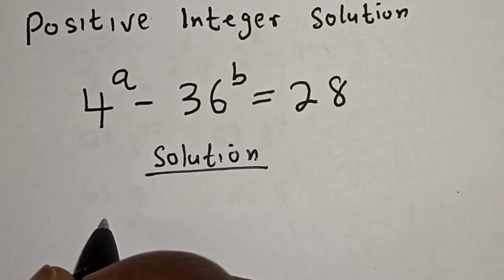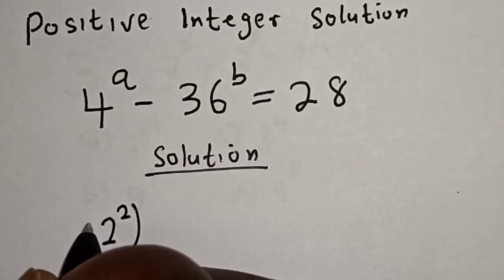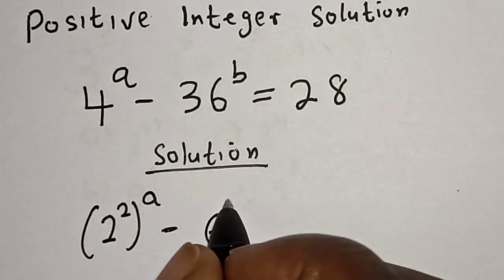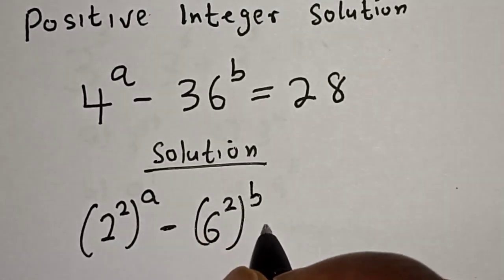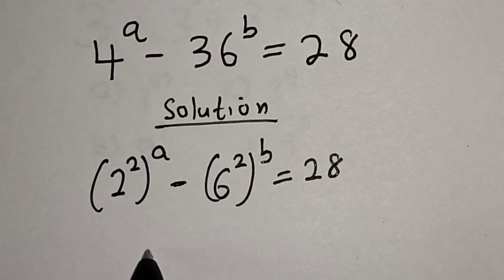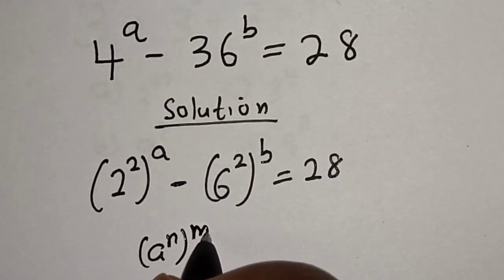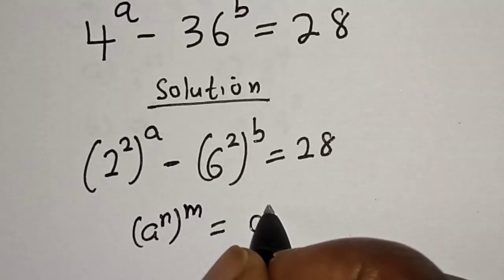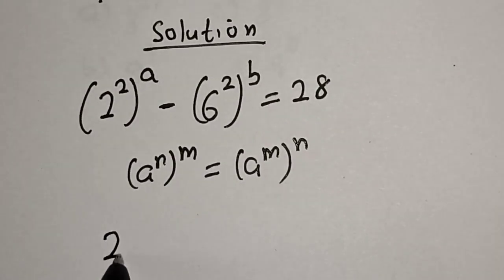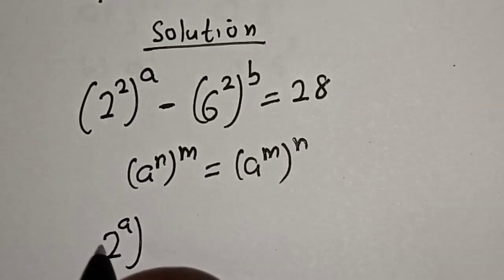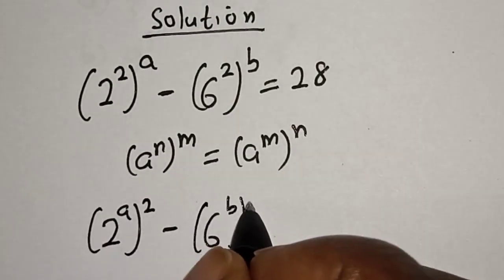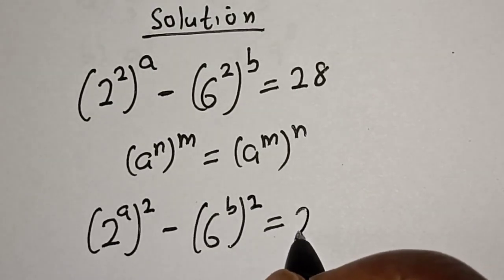4 to the power of a can be written as 2 squared raised to the power a, and 36 to the power of b can be written as 6 squared raised to the power b, which equals 28. Using the rule that a raised to power n, raised to power m equals a raised to power m times n, this becomes 2 raised to the power 2a minus 6 to the power 2b equals 28.